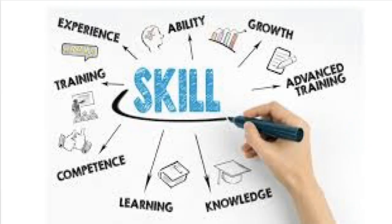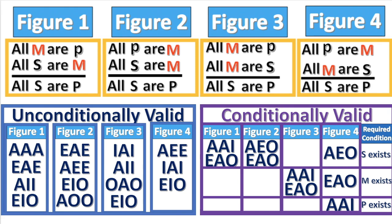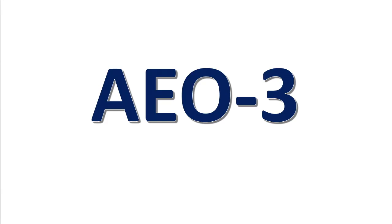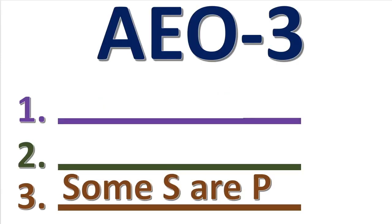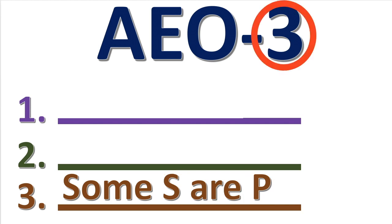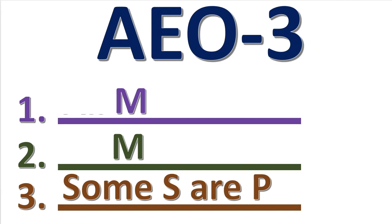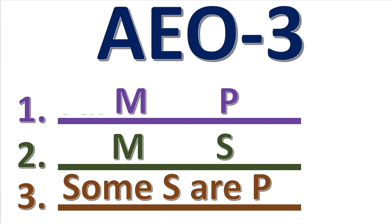Do you have the skills to reconstruct a categorical syllogism from just the mood and figure? If you're given the form A-E-O-3, the first thing you do is write the conclusion, symbolizing the subject with the letter S and the predicate with the letter P. Next, look at the figure to see where the middle term goes. Since it's figure three, the middle term goes on the left in both premises. Then P, which is the major term, must go in the first premise, and S goes in the second premise. Finally, enter the quantifiers and the copulas.